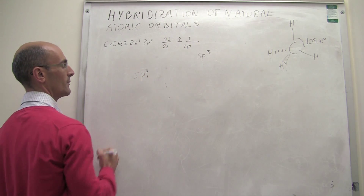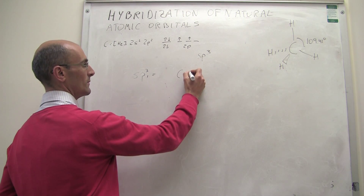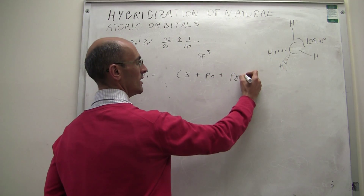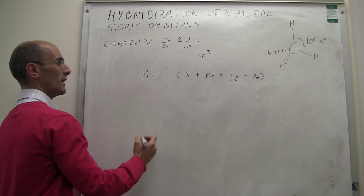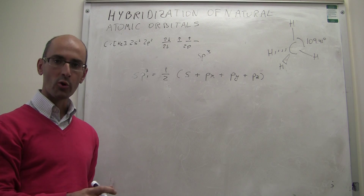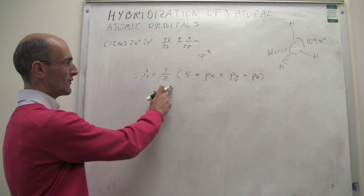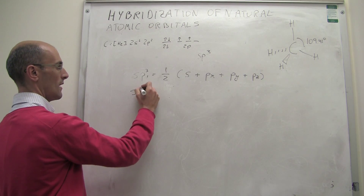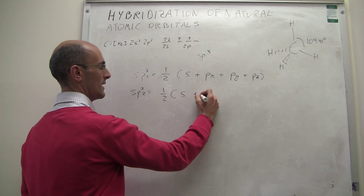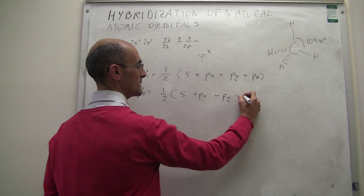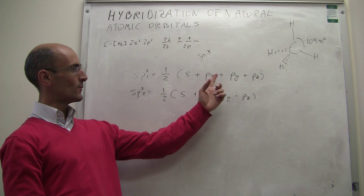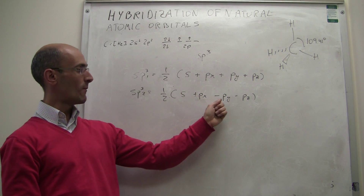The first sp3 hybrid orbital is a linear combination: you mix the 2s with plus 2px, plus 2py, and plus 2pz, with a normalization factor of 1/2. The second linear combination that gives rise to the second sp3 hybrid orbital is: s plus px minus py minus pz. Notice that the coefficients are different — here you have plus 1, plus 1, plus 1, plus 1, and here you have plus 1, plus 1, minus 1, minus 1.